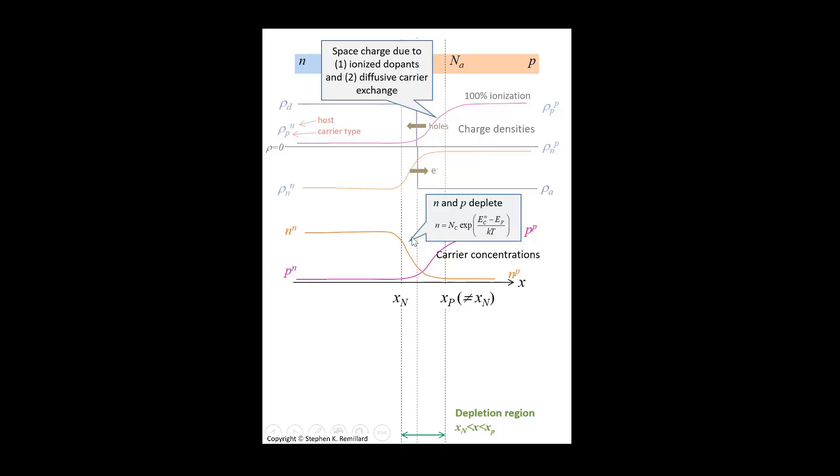If we take the middle vertical dashed line as X equals zero, then X_N is technically a negative number. The distance between these two lines is the depletion region. Depletion because it's depleted of mobile charge carriers—depleted of electrons and holes. In this region between these outer two vertical dashed lines, there is a net charge: positive on the N-side, negative on the P-side.